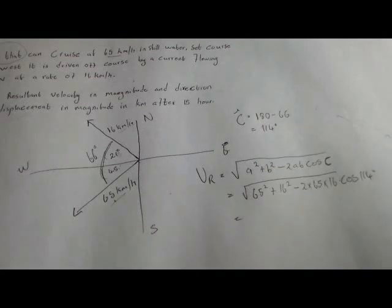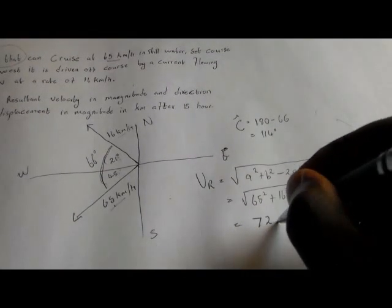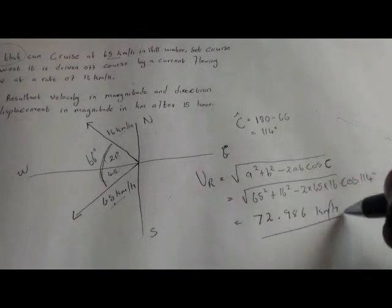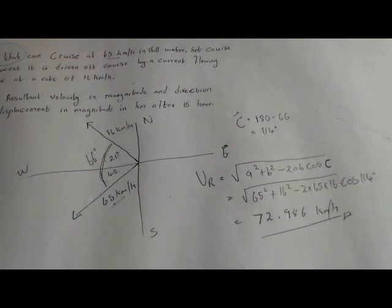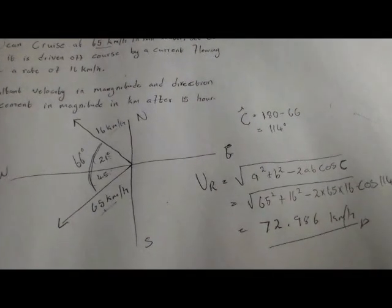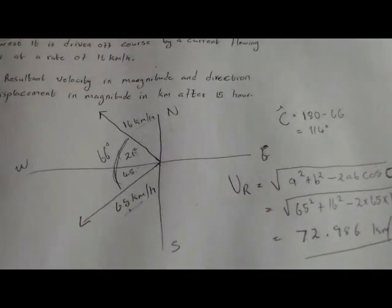Substituting into the cosine rule: a is 65 squared plus b is 16 squared, minus 2 multiplied by 65 times 16 times cos 114 degrees. Our resultant velocity comes out to 72.986 kilometers per hour. You can also solve this by resolving these forces.